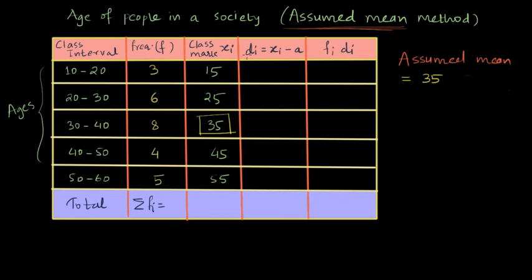Now we are interested in finding the deviation or di for each class interval. So for class mark 15, this 35 is nothing but A. So the deviation will be that class mark minus the assumed mean. So in this case, it will be 15 minus 35, which is minus 20.